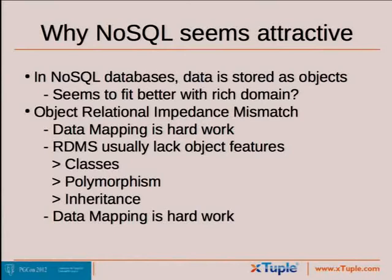We spent some time looking at NoSQL databases ourselves. The main reason is that we want to go to an object model system, and it's well known that it's tricky sometimes to get a relational database to work well in an object-oriented environment. Since a lot of NoSQL databases work with objects, it seemed like a nice fit. There's a technical term called object-relational impedance mismatch that describes what makes it attractive. Data mapping is a lot of hard work, and if you could avoid that hard work, it'd sure be nice.